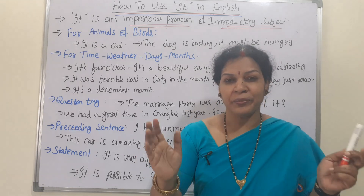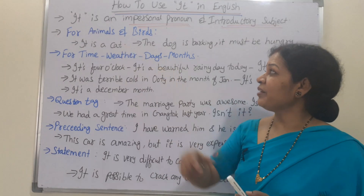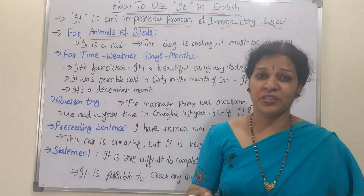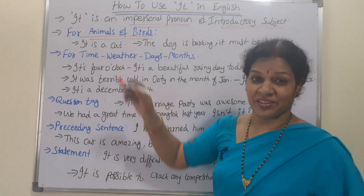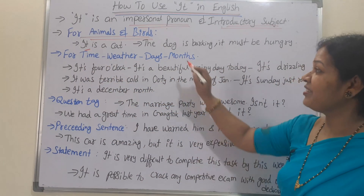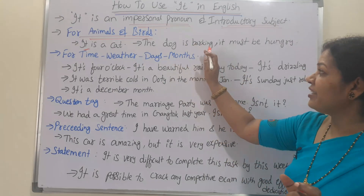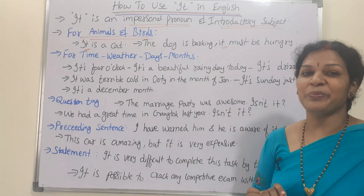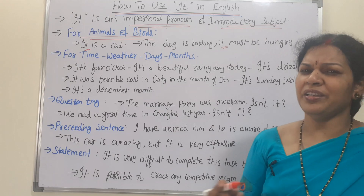So without wasting much time, let's enter into the topic. The first usage is for animals and birds. We can use IT without any hesitation to speak about animals and birds. For example: It's a cat. Or: The dog is barking — it must be hungry. So we can use IT for any animals or birds.